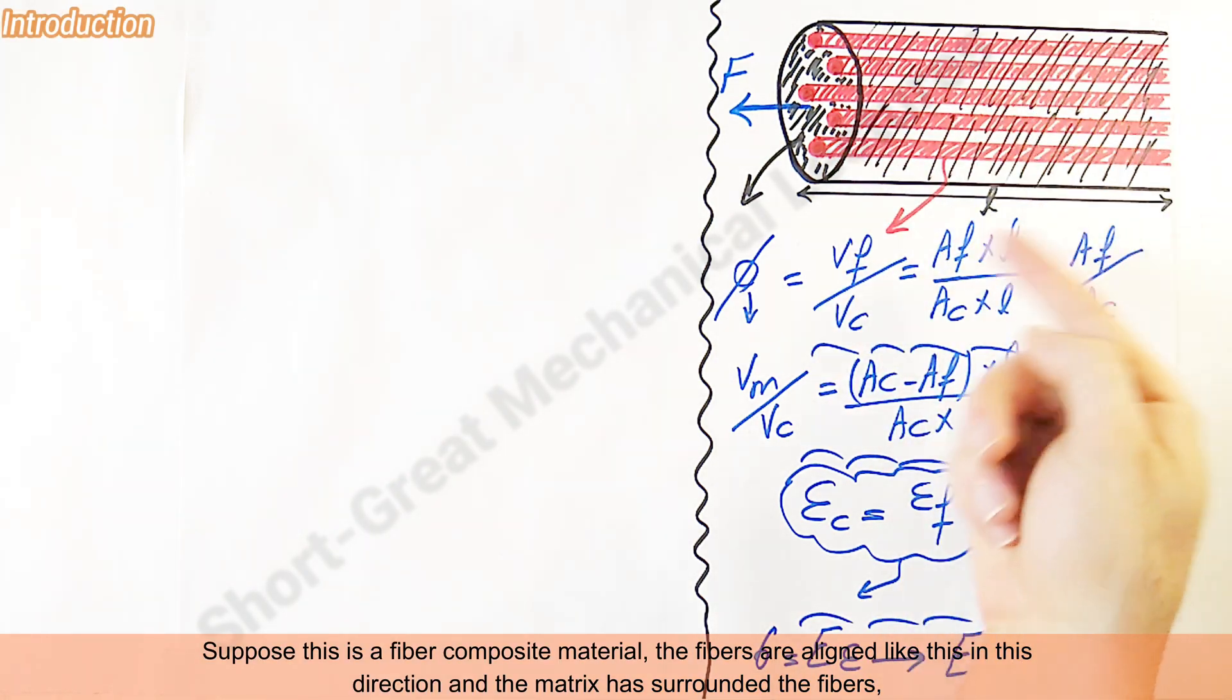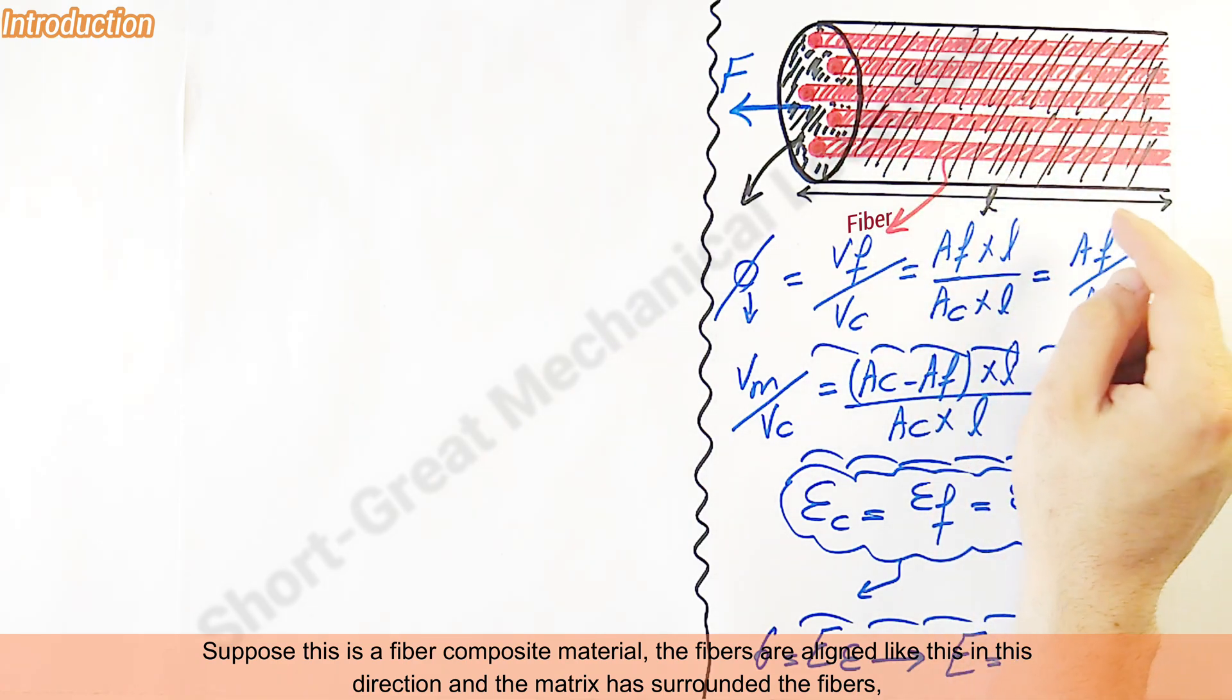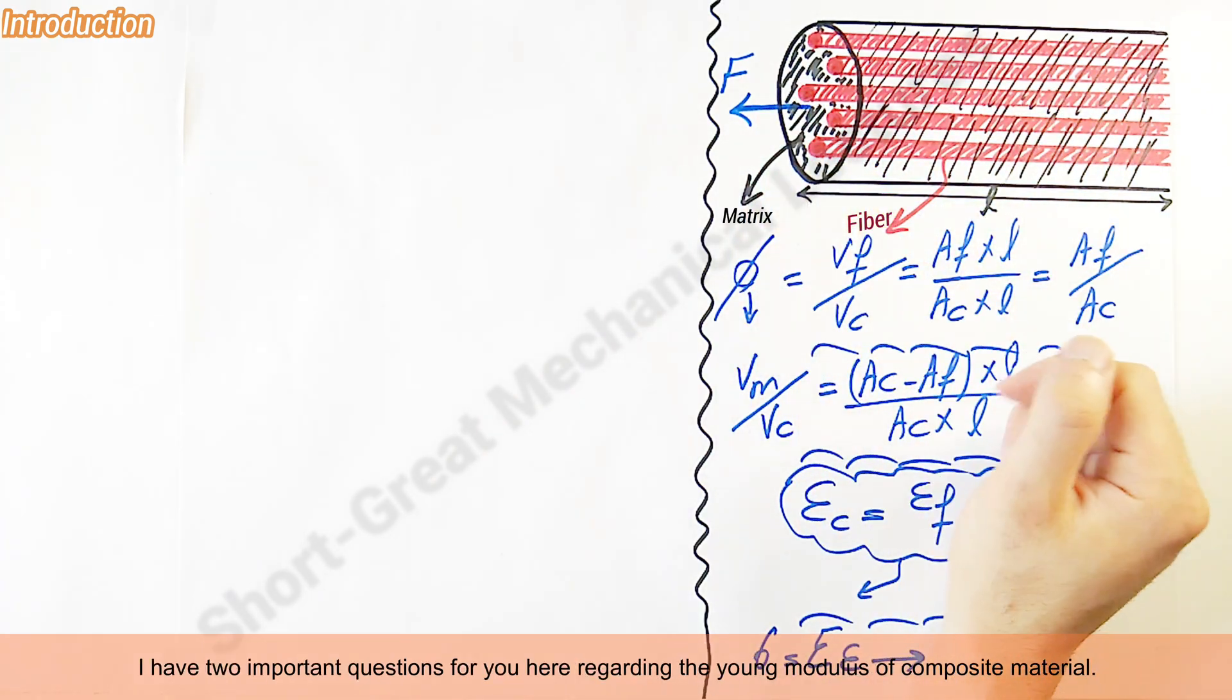Suppose this is a fiber composite material. The fibers are aligned like this in this direction and the matrix has surrounded the fibers. I have two important questions for you here regarding the Young's modulus of composite material.